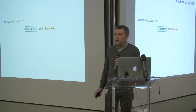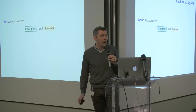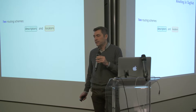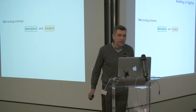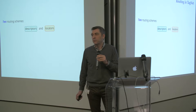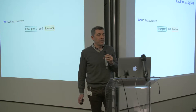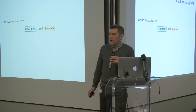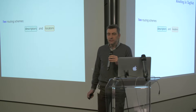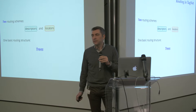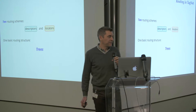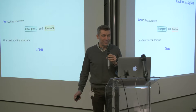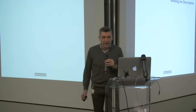Now I'll switch to the network side — how we actually implement this multi-modal addressing scheme. We need two forwarding mechanisms: one to forward packets by locator, and one to forward packets by descriptor. Our key insight: trees. The future of the internet will be full of trees.